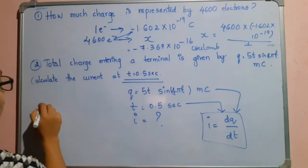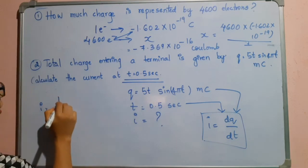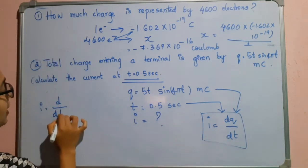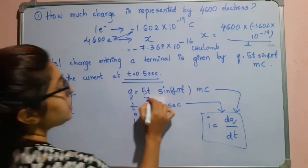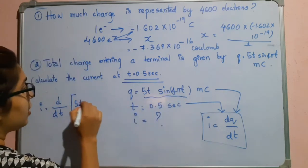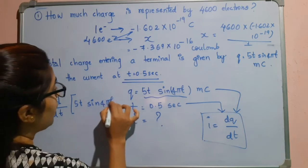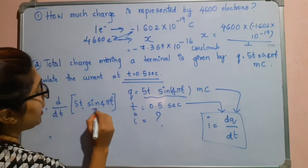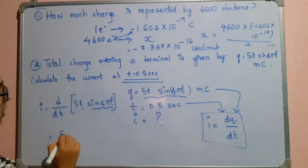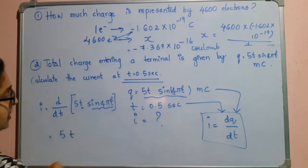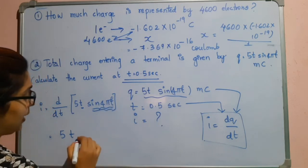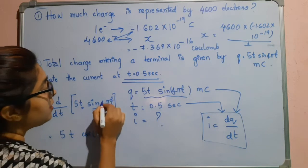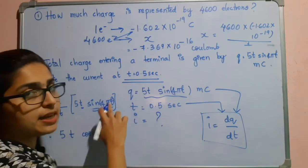i is equal to dq/dt, so d/dt of 5t·sin(4πt). Now I will differentiate this. Differentiating using the product rule: first I will keep t as it is, then differentiate sin(4πt), that is cos(4πt), then we have this term 4π because there is a t term.